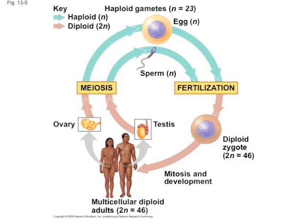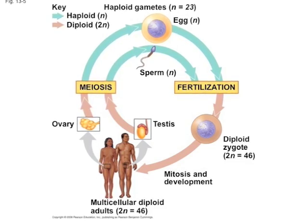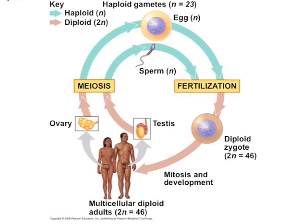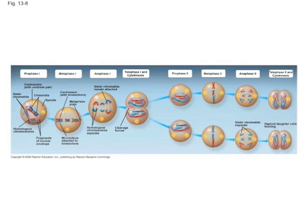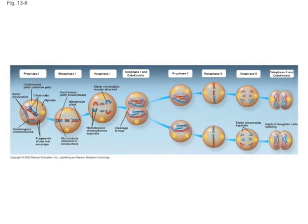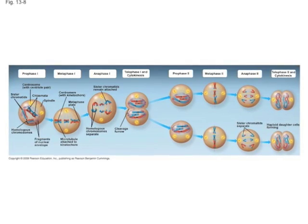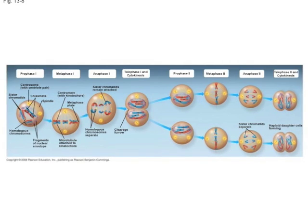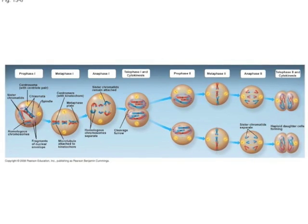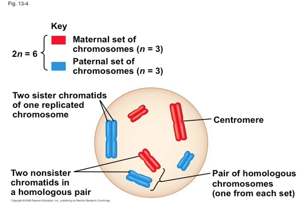Meiosis is the process of creating gametes. Meiosis is important because it creates the cells that create life, and it allows for genetic variation. Meiosis is in two parts: meiosis I is the separation of the homologous chromosomes, and meiosis II is the separation of the sister chromatids. Most cells have a diploid number of chromosomes represented by 2N, whereas gametes have a haploid number of chromosomes represented as N.